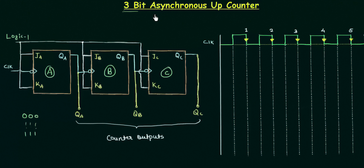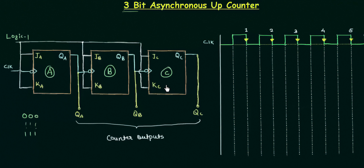We will start from the circuit on the left-hand side of the screen. I have used three flip-flops A, B, and C. The main external clock is given to flip-flop A, then the output QA is given to flip-flop B, and then the output QB is given to flip-flop C. In this way the clock has been cascaded to the different flip-flops.